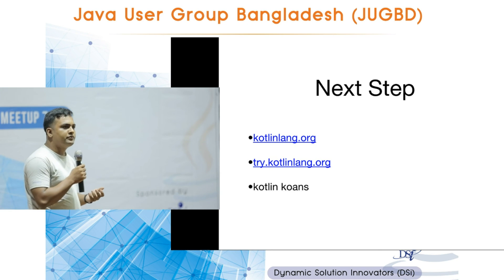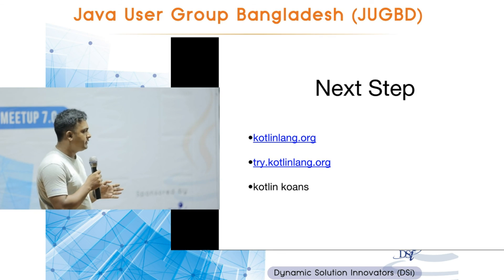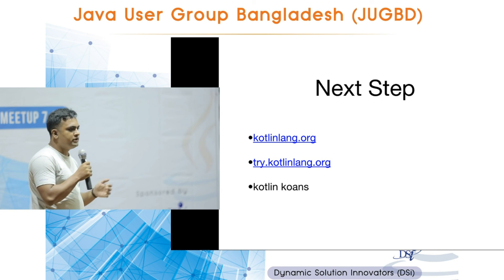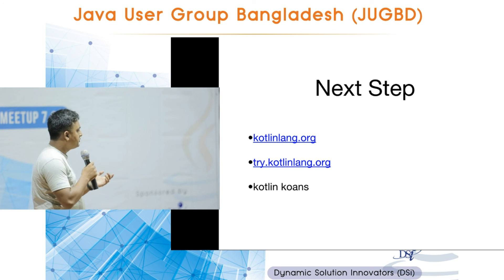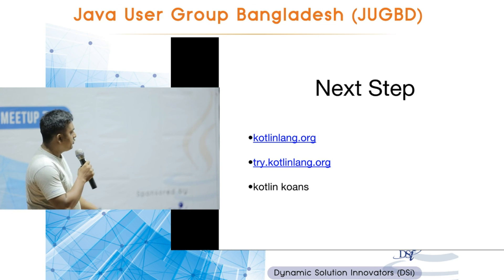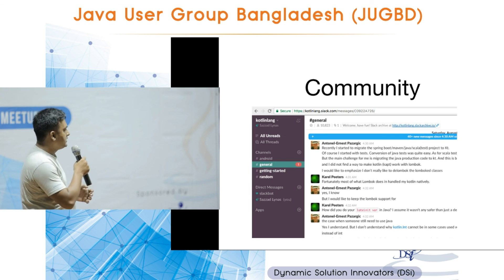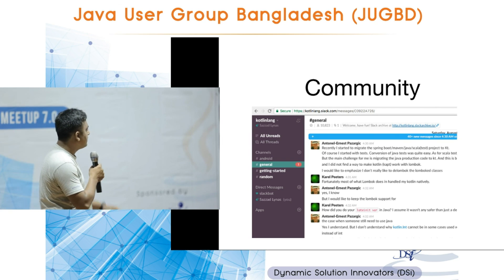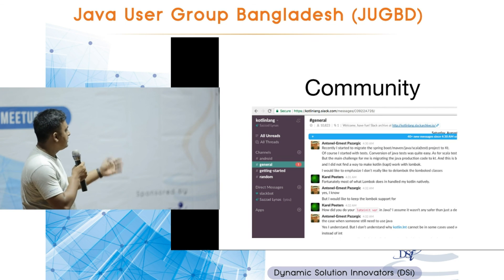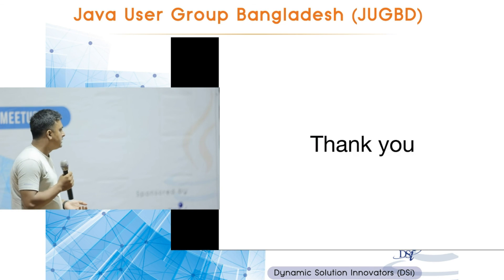For next steps, go to kotlin.org — they have really good documentation. You can also go to try.kotlin.org where you can use an interactive web IDE to learn Kotlin without any setup. Kotlin Koans is another interactive tutorial. Kotlin also has a great community with almost 11,000 members in the Slack general channel, so if you have any questions you can ask there or on Stack Overflow. That's all for now. Thank you.